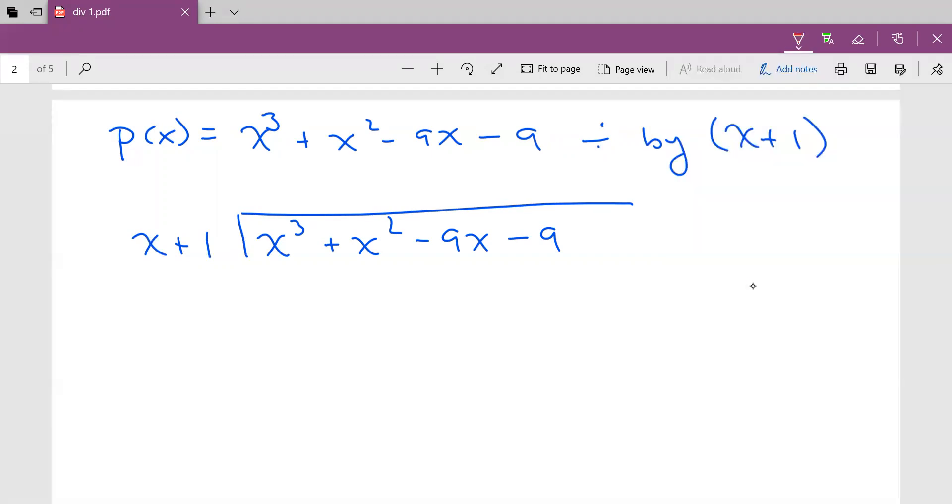We say to ourselves, what do I multiply this x by to get x³? x². So then we multiply x² times x is x³, and x² times 1 is plus x².